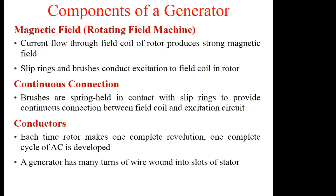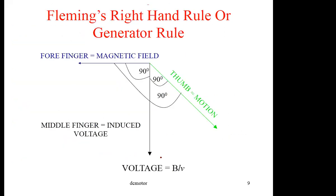This magnetic field is produced by the currents. We talked about the solenoid, whereby you wind coils on a core and produce a magnetic field. By using DC to produce a magnetic field, there is a continuous connection given by the brushes, which are held in place by a set of springs. Then you have the conductors, which are the ones on which the EMF is generated.